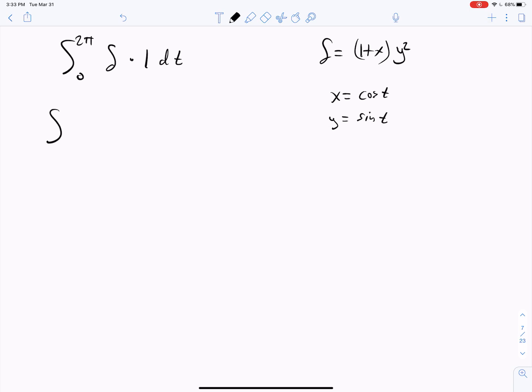And therefore, what we've really got is the integral from 0 to 2π of 1 plus cosine t times sine² t dt. And now we just have a calculus 1 integral.